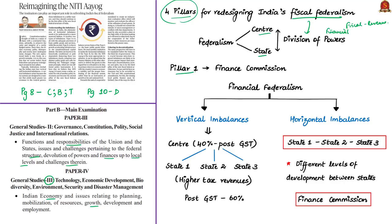The first pillar proposed by the authors is the Finance Commission. To understand why the Finance Commission's role is important, we need to know the imbalances in the financial federal structure. Countries with fiscal federalism typically have two types of imbalances: vertical imbalance and horizontal imbalance. Vertical imbalance refers to the imbalance between the central government at the top and the state governments at the next level, specifically in how tax revenues are shared.